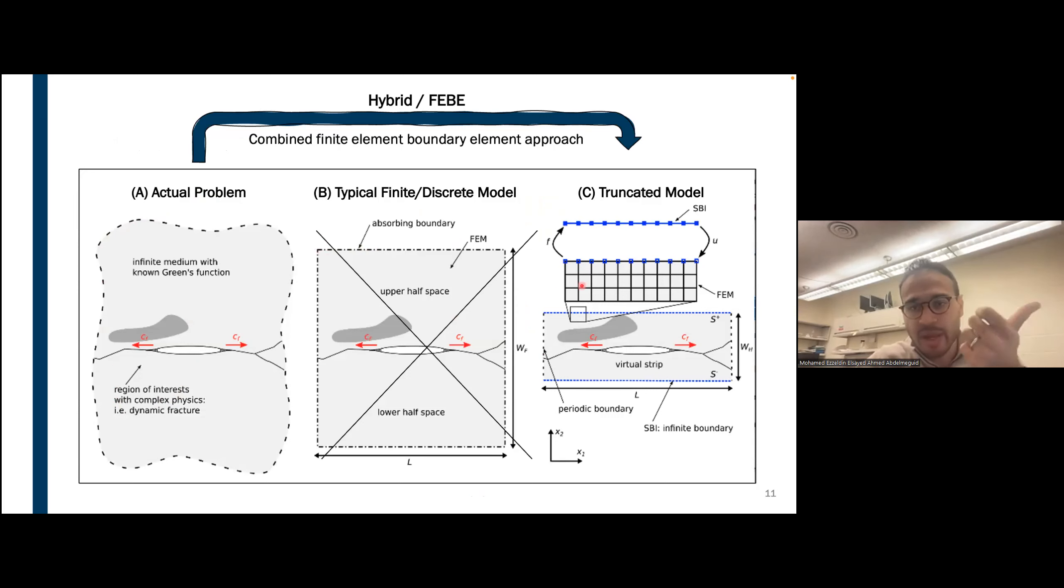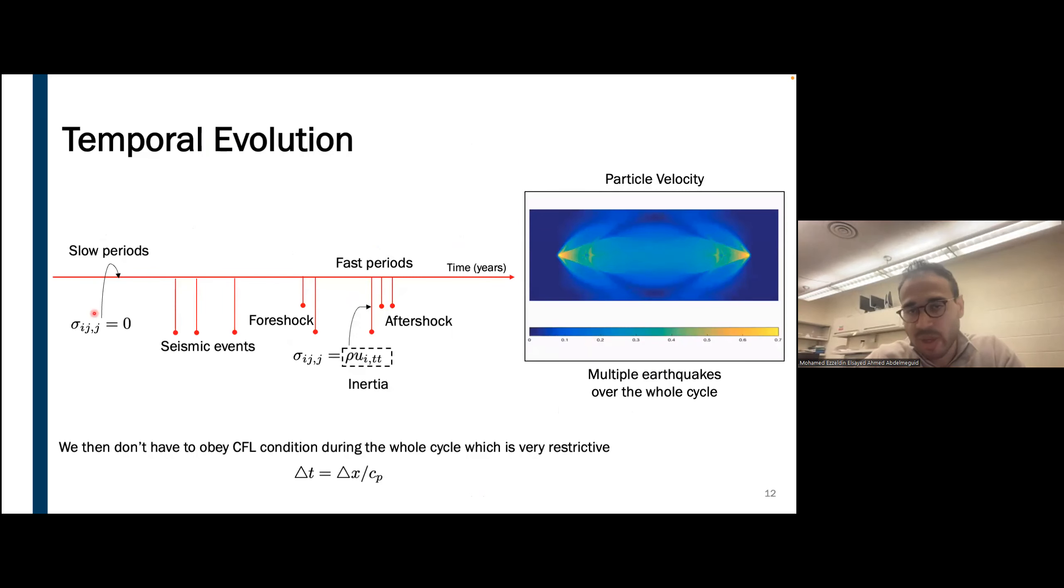Similarly in time, single earthquake models usually model few seconds. Here we're aiming to simulate years of slow loading and then dynamic ruptures. In order to do that, we rely on a simplification that mainly ignores inertia during the periods without earthquakes and then reincorporates it during the periods of earthquakes. This way, we can have less stringent conditions on the time integration.